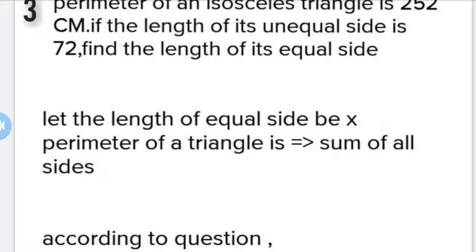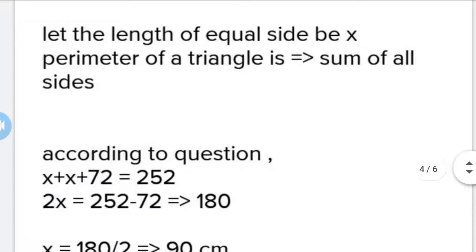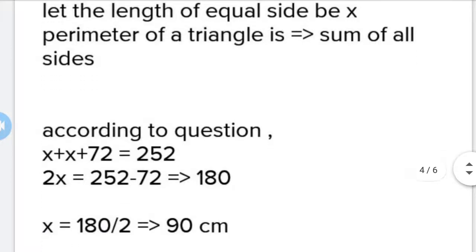We have three sides - two equal sides x and one side given as 72. So 2x + 72 = 252. This becomes 2x = 252 - 72, which equals 180.